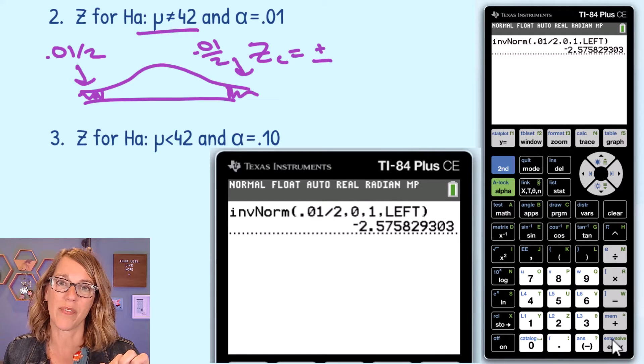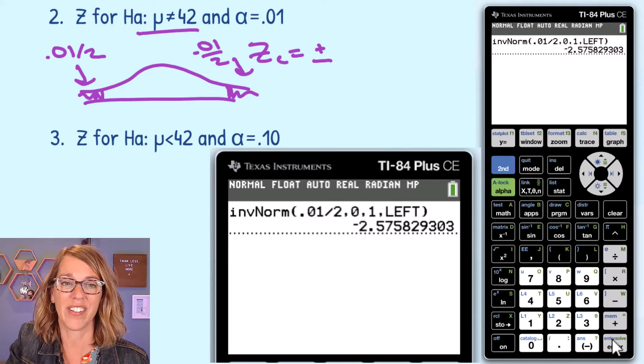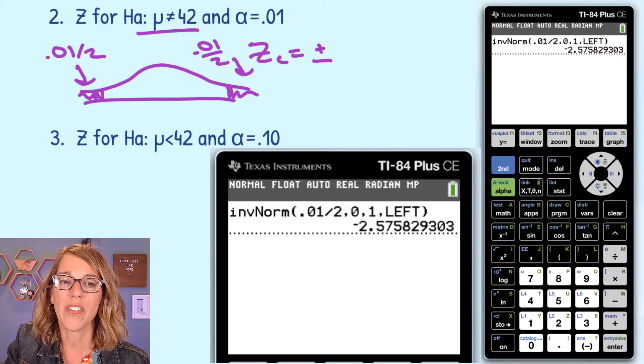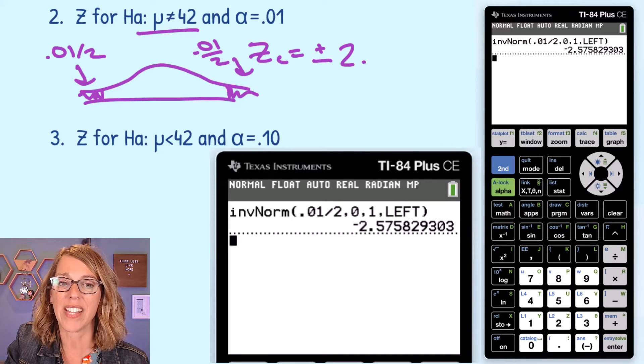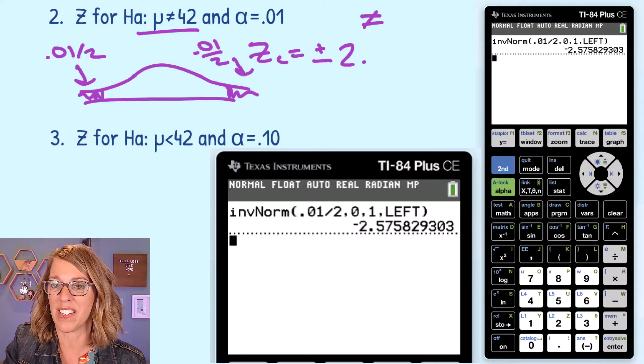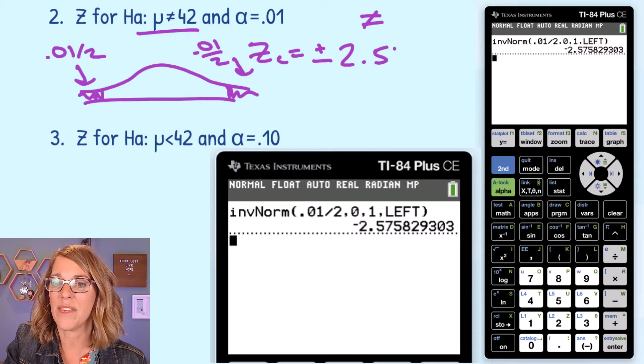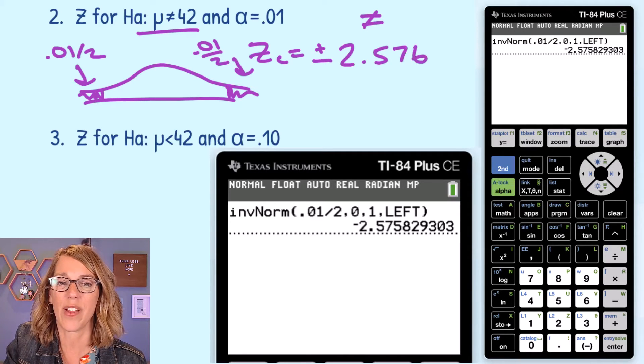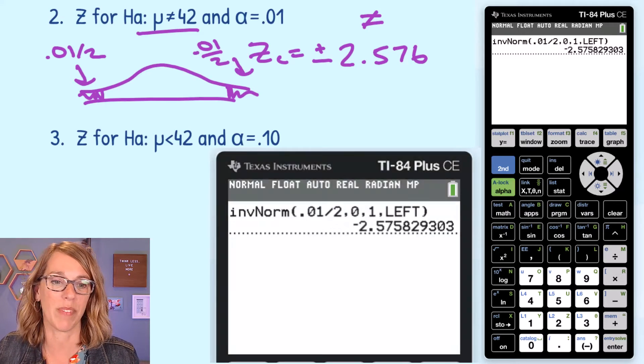And I get that 2.576. It only gives me the one from the left. So that's all your calculator can give you. But we know that this lives on both the left and the right. So that not equals gives me a plus or minus 2.576 if I round there to three decimal places.